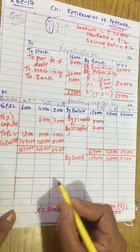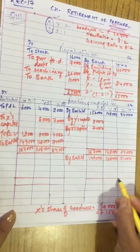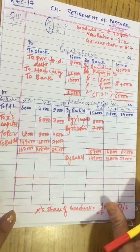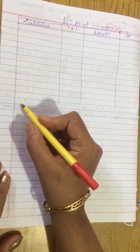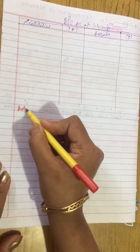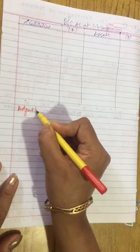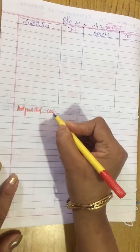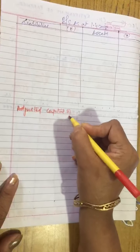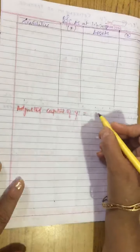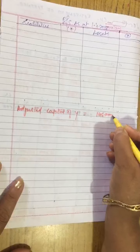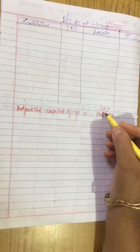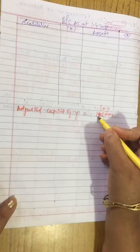Now we need to calculate new capitals. Adjusted capital of Y is 1,28,000 and adjusted capital of Z is 71,000. Amount payable to X — how much do we need to pay X? That is 1,49,000.